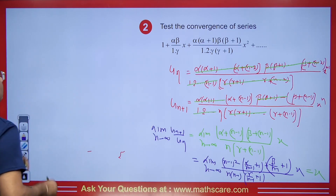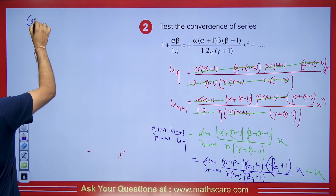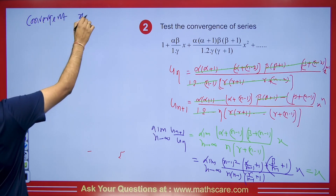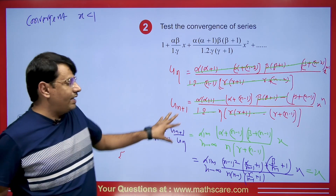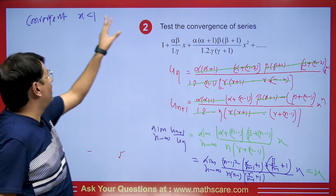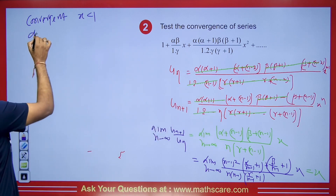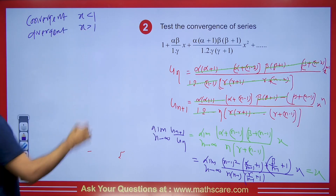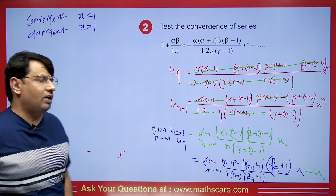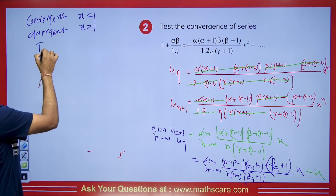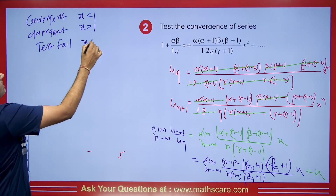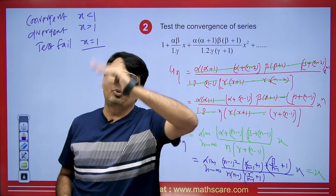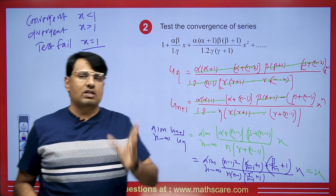From the D'Alembert ratio test: the series is convergent when x < 1, divergent when x > 1, and the test fails when x = 1. When the test fails at x = 1, we apply the Gauss test.